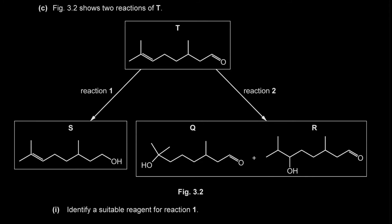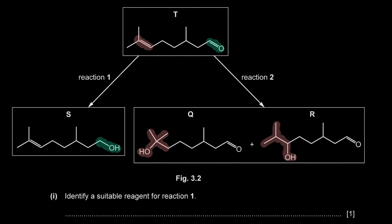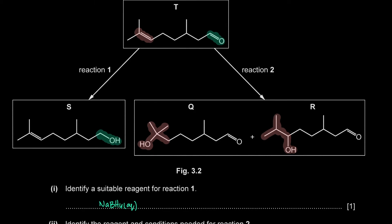Figure 3.2 shows two reactions of T. In reaction 1, the aldehyde is reduced to a primary alcohol. A suitable reagent is NaBH4 (aqueous sodium borohydride) or LiAlH4 in dry ether. In reaction 2, the alkene undergoes electrophilic addition of water (hydration). The reagents and conditions are steam (H2O gas) and phosphoric acid (H3PO4) as a catalyst.